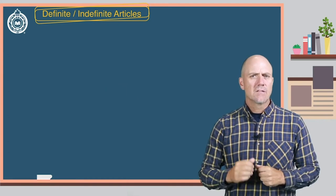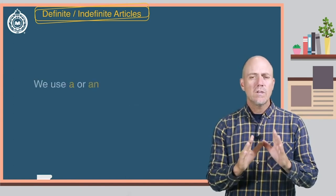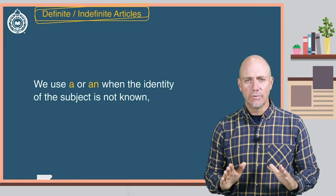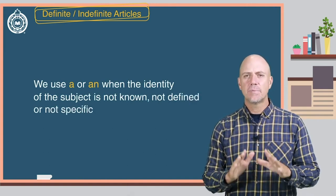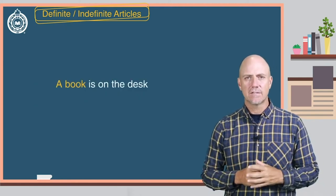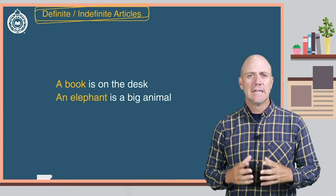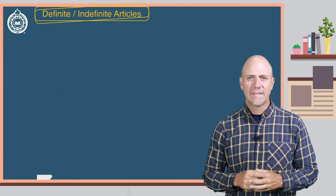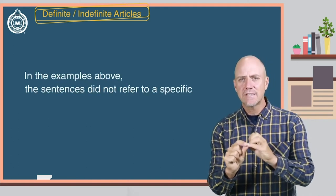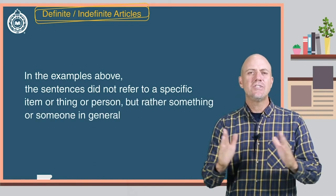Okay, so when do we use the indefinite article a or an in English? Well, we use a or an when the identity of the subject is not known, not defined, or not specific. Here are some examples: a book is on the desk. An elephant is a big animal. Somebody call a policeman. In the examples above, the sentences did not refer to a specific item or thing or person, but rather something or someone in general.